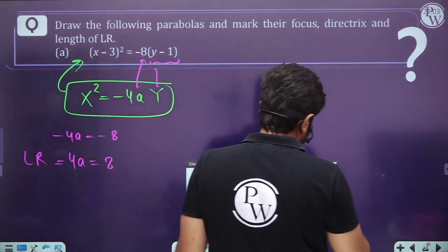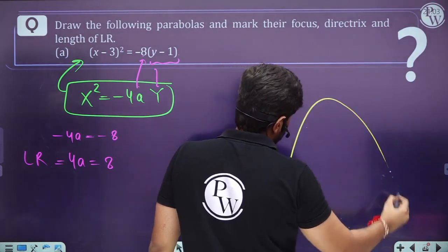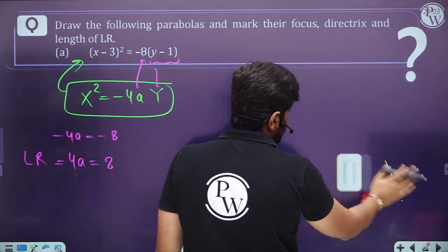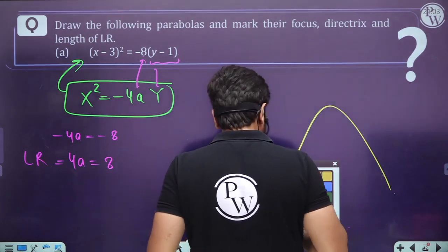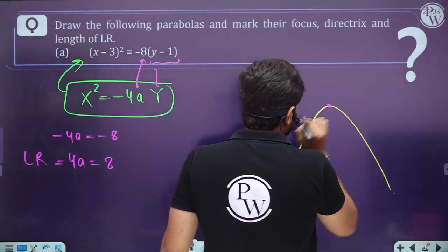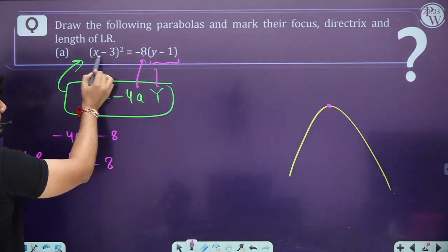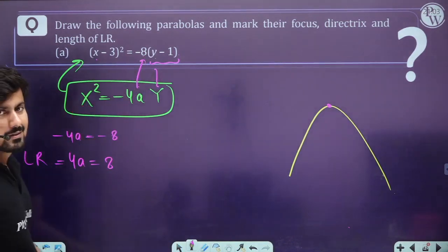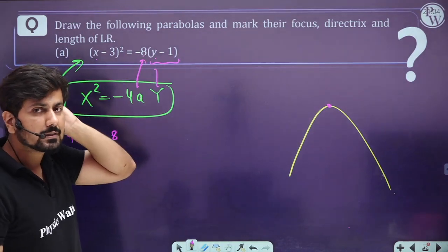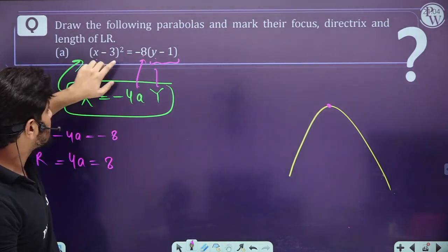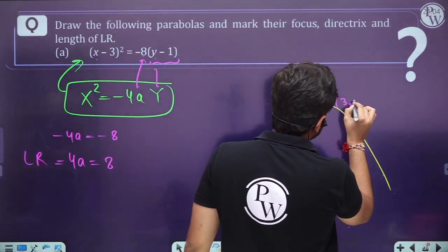(x − 3)² = −8(y − 1) is a downward parabola because it is a quadratic in x and matches x² = −4ay form, giving a downward opening curve with vertex at (3, 1).